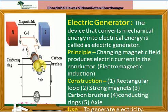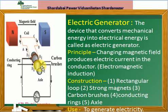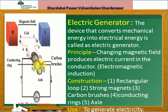According to Fleming's Right Hand Rule, electric current is produced in branches AB and CD in the direction A to B and C to D.